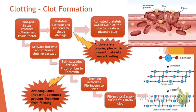Neither antiplatelets nor anticoagulants break down clots that have already formed - they only prevent a clot from getting larger. Anticoagulants make things less sticky and reduce thrombin production, so the mesh isn't as big. When you already have a clot, you give an anticoagulant to prevent further clots from forming and to prevent the existing clot from attracting more material and getting bigger. If your patient is on aspirin, they will still clot - there's nothing blocking their actual clotting cascade.